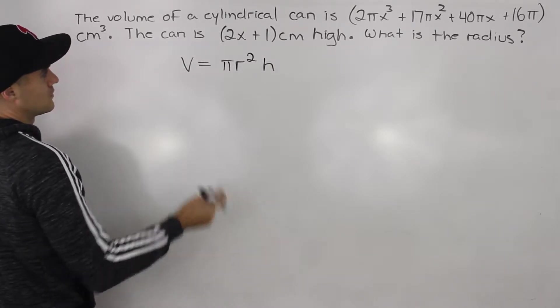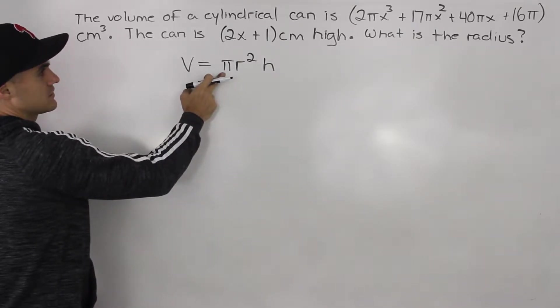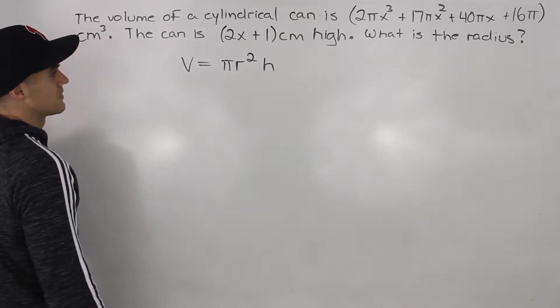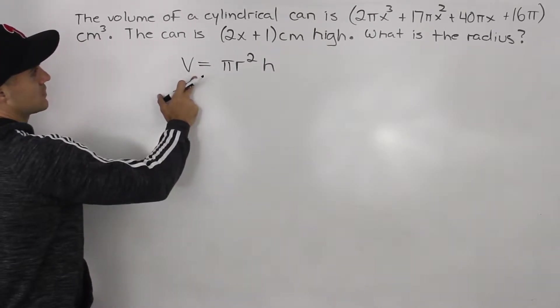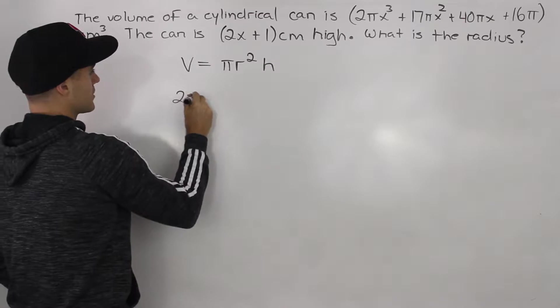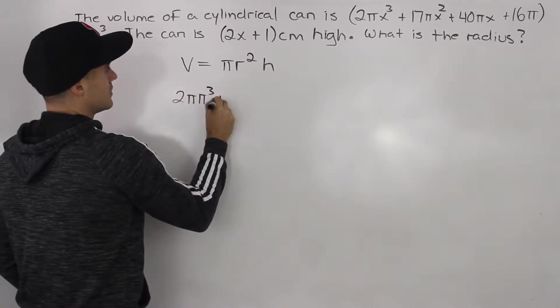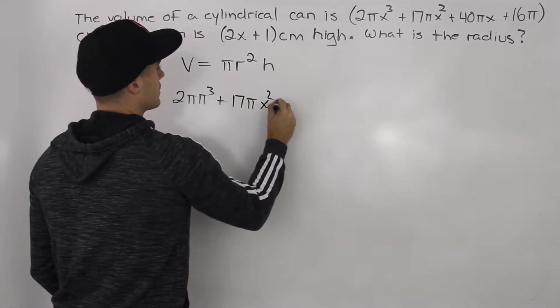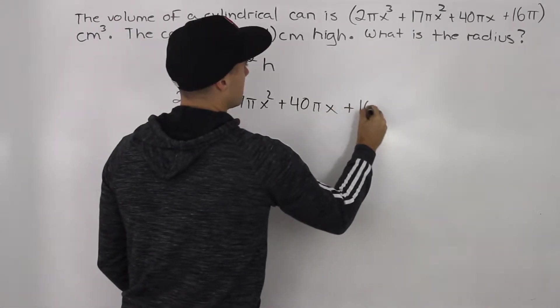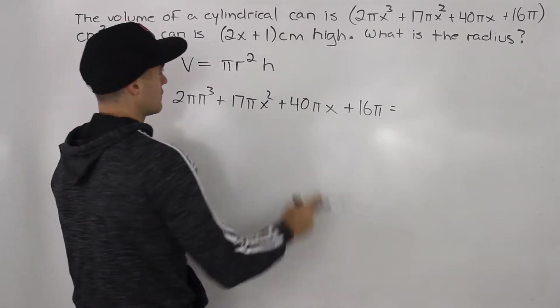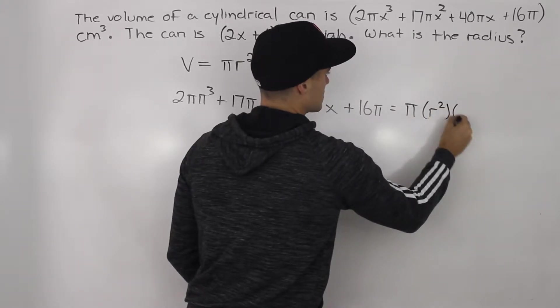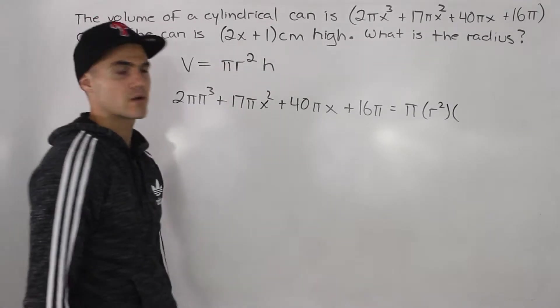We're given the volume, π is just a constant, we're given the height, and we have to solve for this r. This is the equation that we can use. Let's plug everything in. The volume of the cylindrical can is 2πx³ + 17πx² + 40πx + 16π equals πr² times the height 2x + 1.